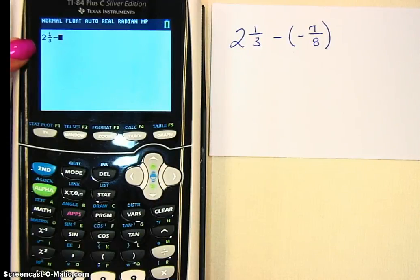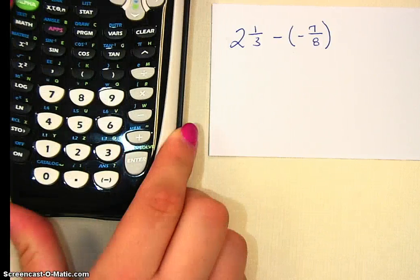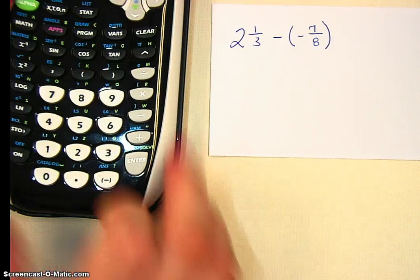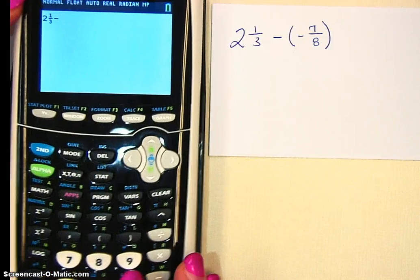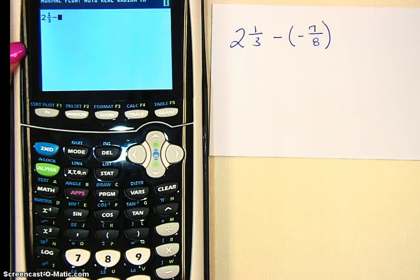Then minus. Now we need to type in negative 7/8. The negative button is at the very, very bottom. You can see it right here. Negative. That is a negative sign. It's not the same as a minus.